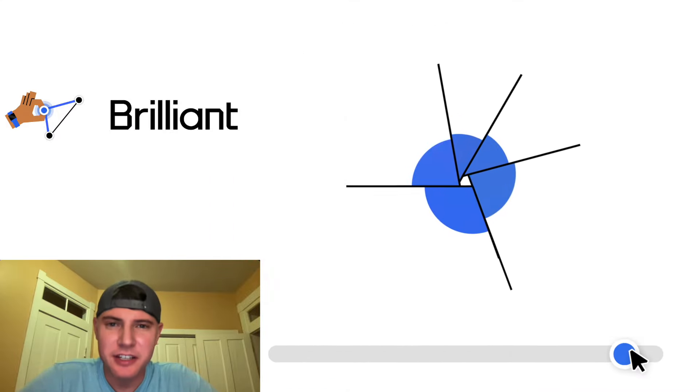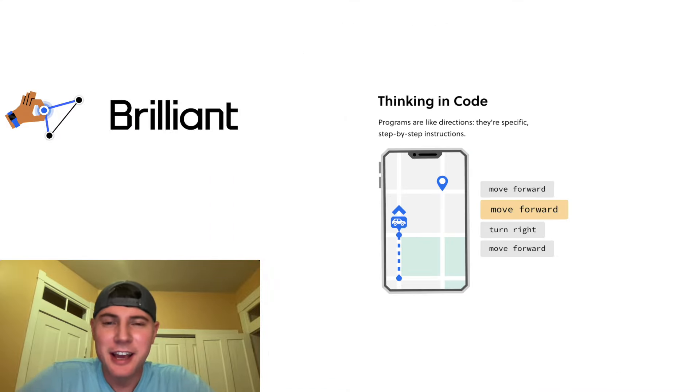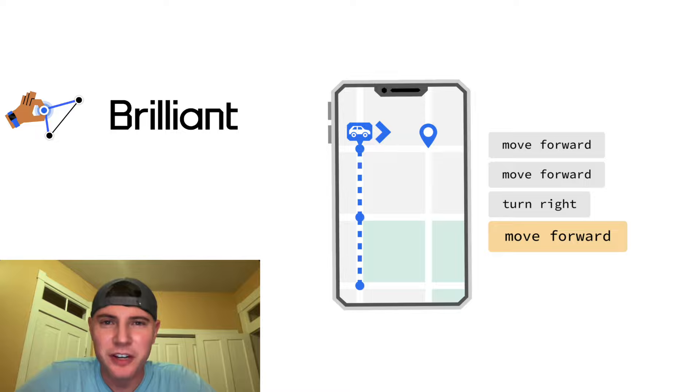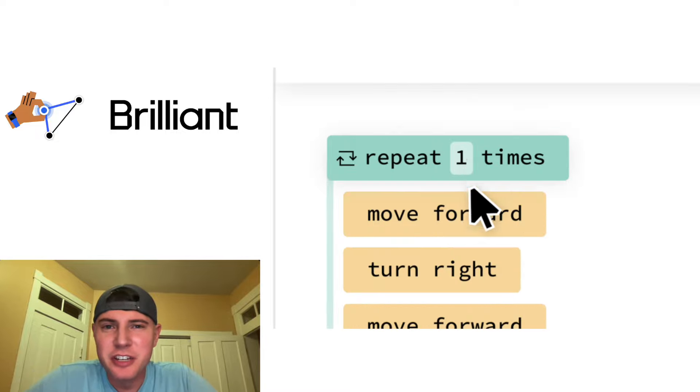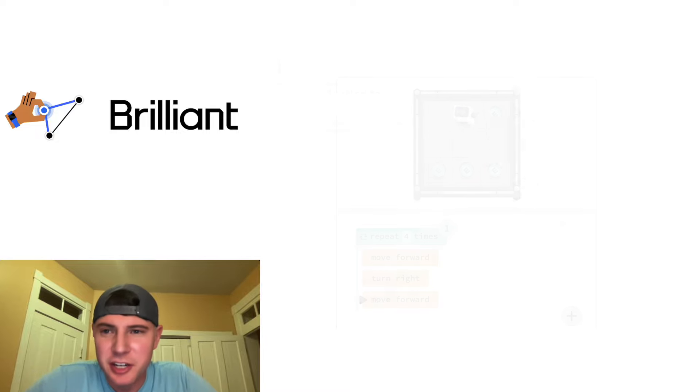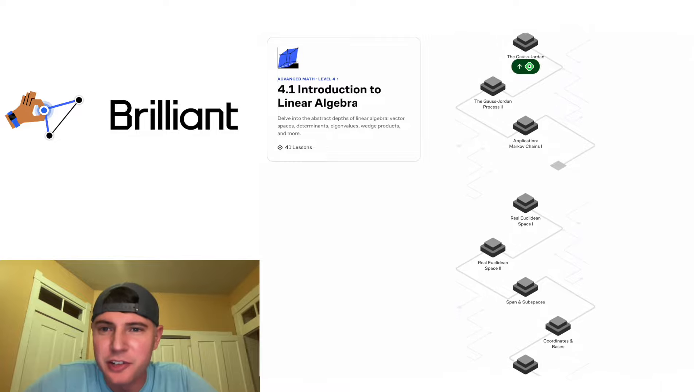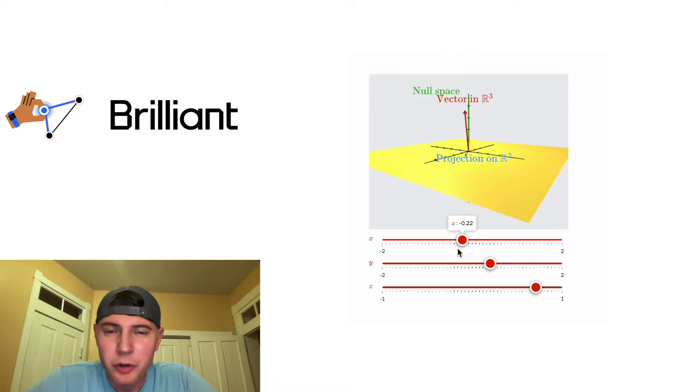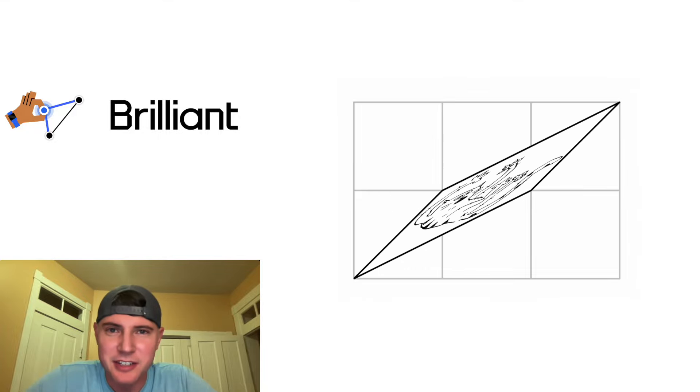Speaking of brilliant, let's talk about Brilliant. Brilliant has thousands of lessons in math, data analysis, programming, and AI. And all of them are interactive, which is the most effective way to learn. For example, if you're interested in learning more about matrix multiplication, they have this beautiful course on intro to linear algebra. It has 41 lessons, and this material pretty much matches the first linear algebra class I took in college.